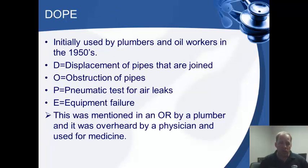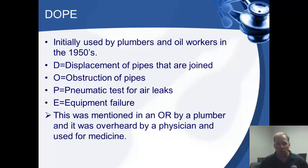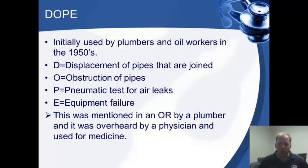A little fun fact: this DOPE mnemonic actually came from some plumbers working in an OR. They mentioned this is how they look at pipes to make sure all pipes are connected and doing what they're supposed to do. Somebody in the OR thought it was a great idea to use for ventilating patients. D is displacement of the ET tube. O is obstruction — could be a mucus plug, excessive secretions, or blood. We need to clear that out with suctioning or by replacing the tube.